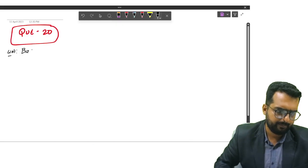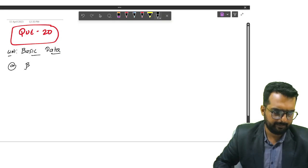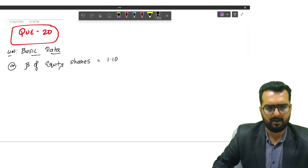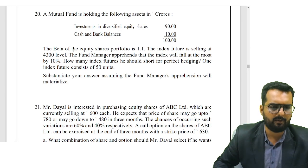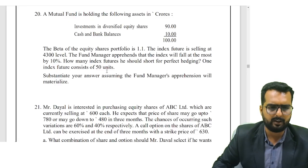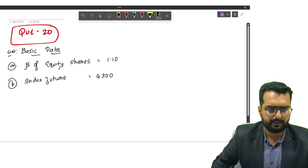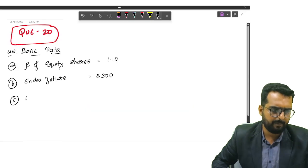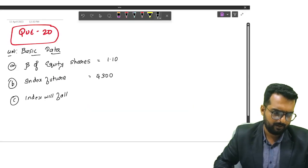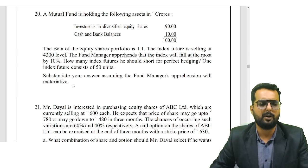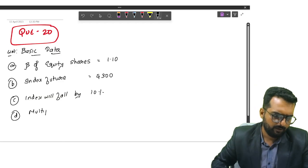Let me write down the basic data now. They are saying that the fund manager apprehends that index will fall by how much? Index will fall by 10%. How many index futures should he short for a perfect hedging? And the multiple is said to be 50.